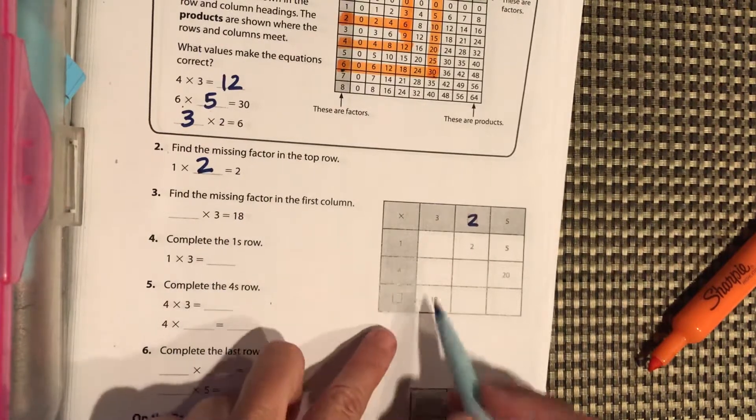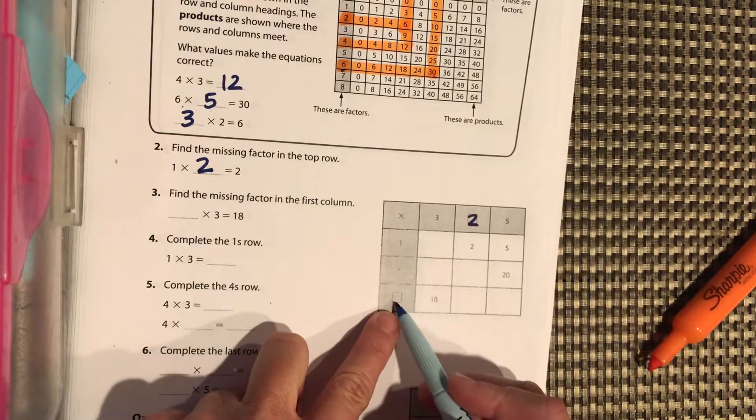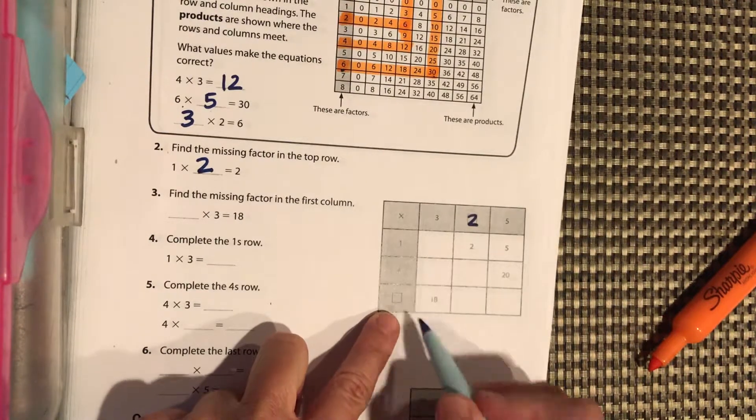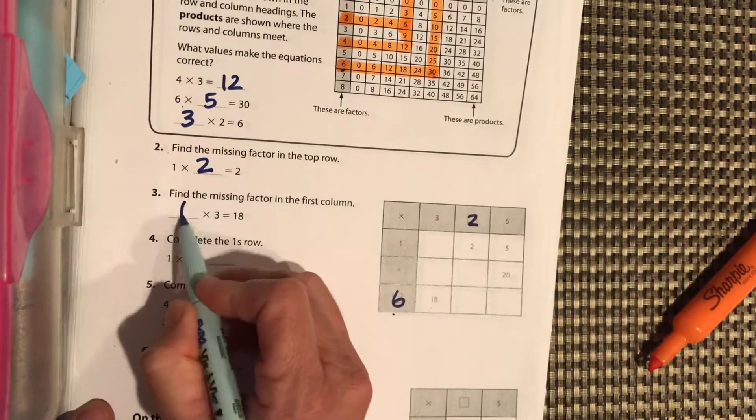Find the missing factor in the first column. So 3 times what equals 18. So 3 times 6 equals 18.